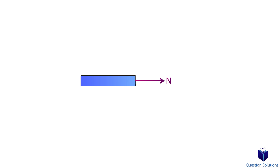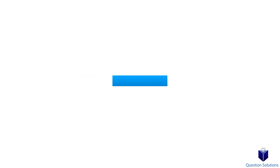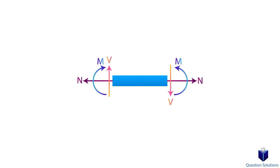We represent the normal force with the letter N. Next we have the shear force, that's tangent to the cross section, usually represented with the letter V. Lastly we have a bending moment, which we represent with the letter M. The normal force is positive if it creates tension. A shear force is positive when it causes the beam segment to rotate clockwise, and the moment is positive when the segment will bend in a concave upward manner.